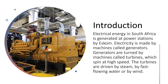Introduction. Electrical energy in South Africa is generated at power stations by ESCOM. Electricity is made by machines called generators. Generators are turned by machines called turbines, which spin at high speed. The turbines are driven by steam, by fast flowing water or wind.